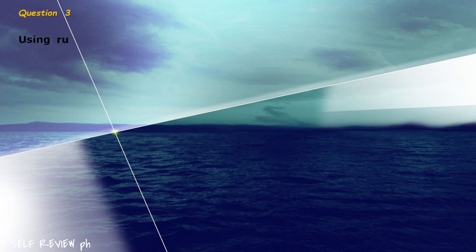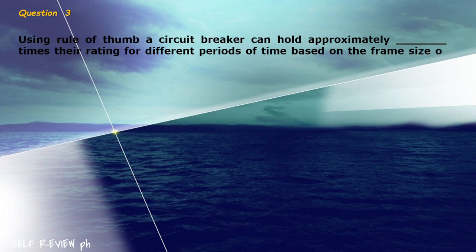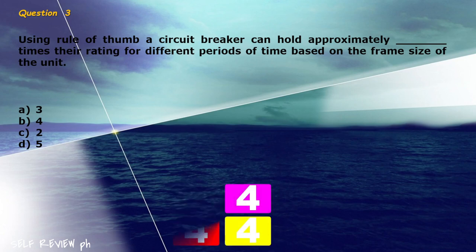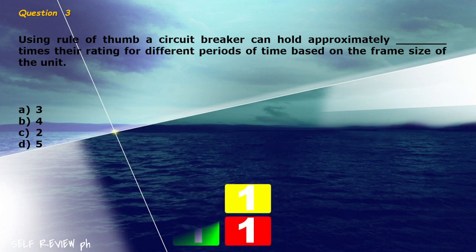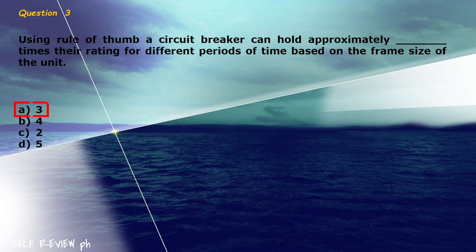Question 3: Using rule of thumb, a circuit breaker can hold approximately blank times their rating for different periods of time based on the frame size of the unit. A) 3, B) 4, C) 2, D) 5. The correct answer is letter A, 3.